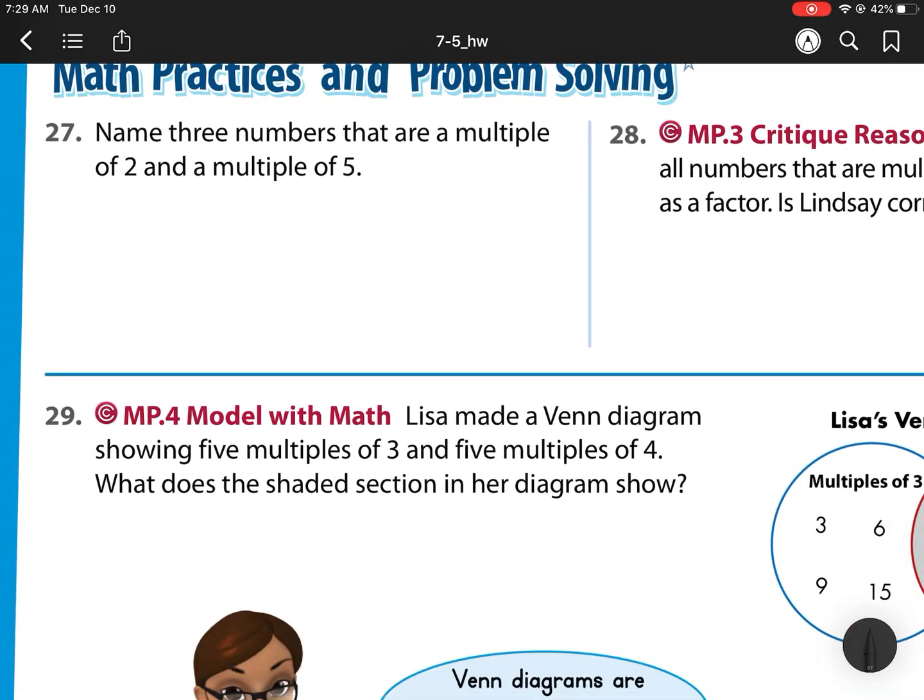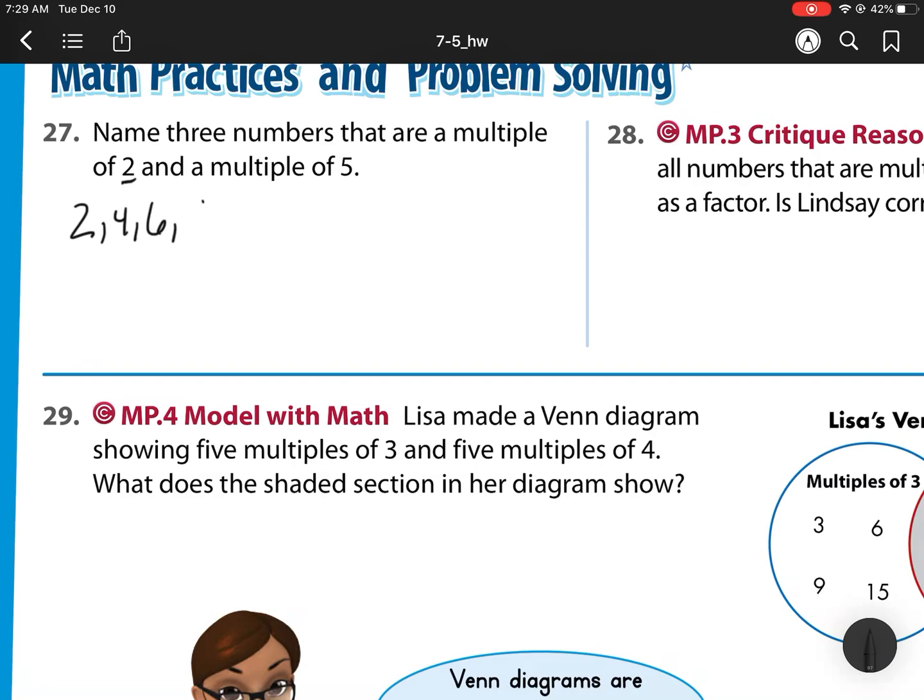So, 27. Name 3 numbers that are a multiple of 2 and a multiple of 5. So, this means it has to have 2 as a multiple and 5. So, let's see if we can find a pattern here. So, let's start with 2 and see if we can get to 1 as 5. So, 2, 4, 6, 8, 10. Well, there's one multiple of 5 because that's 5, 10. So, now what I'm thinking is that means every multiple of 10 is a multiple of 2 and a multiple of 5. So, let's go 10, 20, 30. And, there are my three numbers.